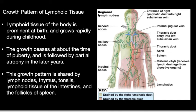Lymphoid tissue of the body is prominent at birth, grows rapidly during childhood, and the growth ceases at about the time of puberty, followed by partial atrophy in the later years. This growth pattern is shared by the lymph nodes.